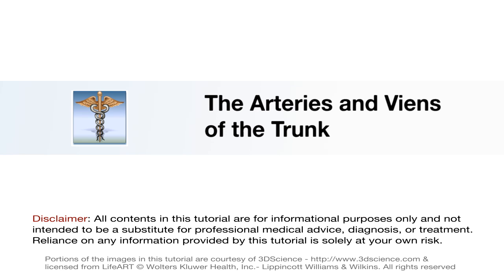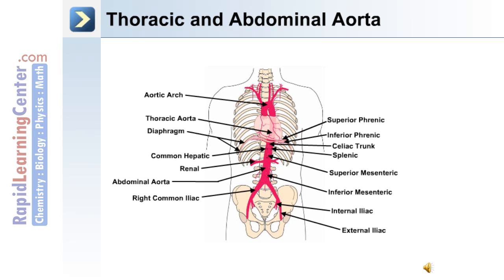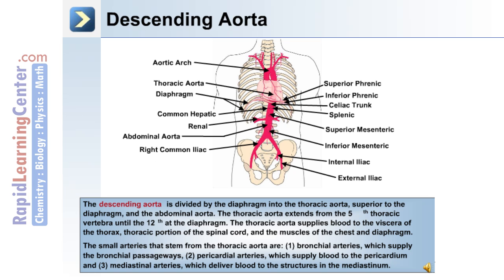We now move on to discuss the arteries and veins of the trunk region of the body. The following image shows the arterial branches from the thoracic and abdominal aorta. The thoracic aorta passes down through the chest behind the heart. At the level of the diaphragm there is a superior phrenic artery and the inferior phrenic artery. Just inferior to the diaphragm is the celiac trunk, the splenic artery, and the common hepatic artery. The abdominal aorta eventually divides into the right and left common iliac arteries. In the abdominal region there are superior mesenteric and inferior mesenteric arteries that supply the intestines.